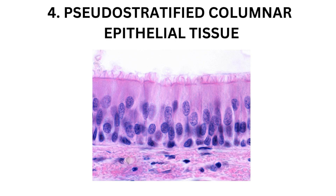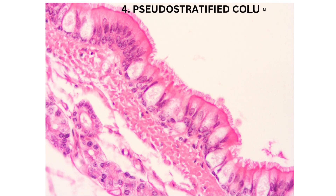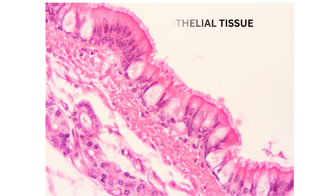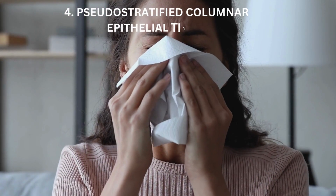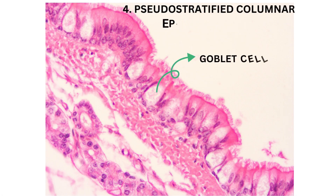Pseudo-stratified columnar epithelium appears stratified but is actually a single layer of cells of varying heights. It typically lines the respiratory passages and contains goblet cells that secrete mucus.